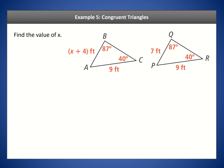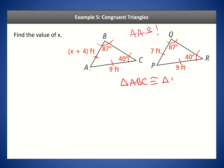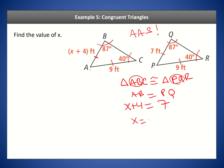Now let's look at some congruent triangle examples. We have two triangles. We have an angle, an angle, and a side — with both sides measuring nine, so they're congruent. Angle, angle, side — so these two triangles are congruent by AAS. Because they're congruent, corresponding parts must match, meaning QP is congruent to AB. Triangle ABC is congruent to triangle EQR, which means AB equals PQ. So X plus four equals seven, meaning X equals three.